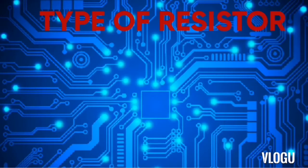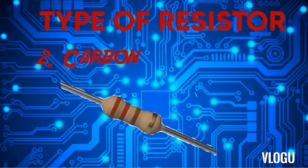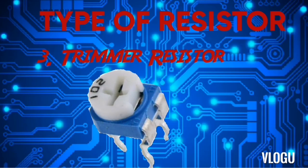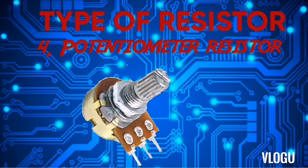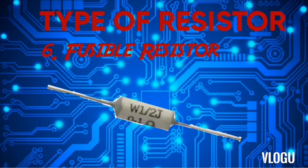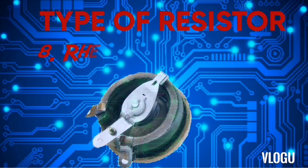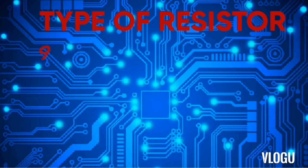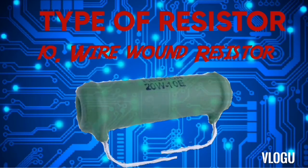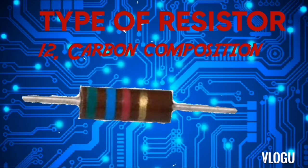We have different types of resistor: 1. Cement resistor. 2. Carbon resistor. 3. Trimmer resistor. 4. Potentiometer resistor. 5. Varistor resistor. 6. Fusible resistor. 7. Thermistor resistor. 8. Rheostat resistor. 9. Surface mount or SMD. 10. Wire wound resistor. 11. Photoresistor or LDR. 12. Carbon composition resistor.